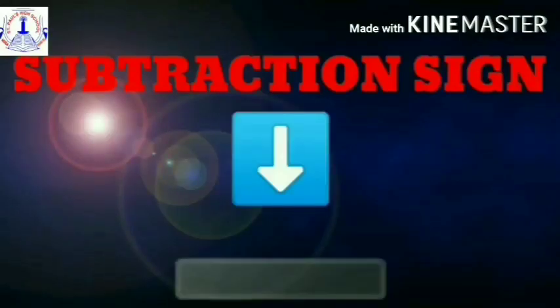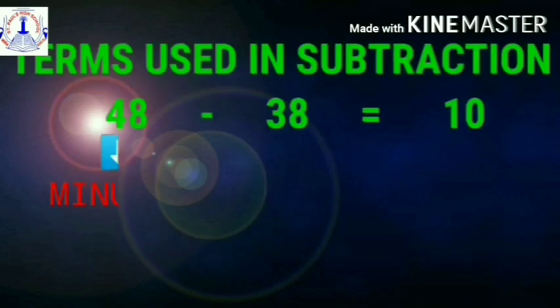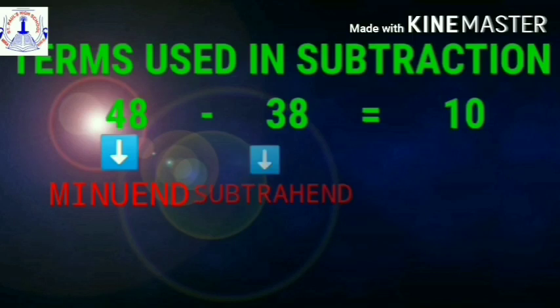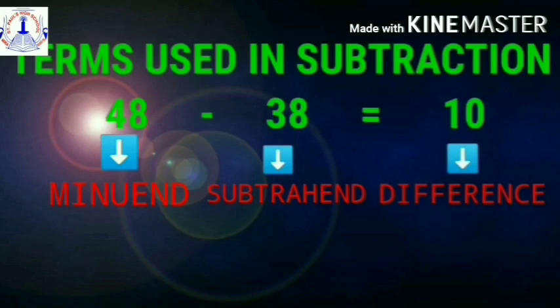We use the subtraction sign to write the subtraction sentence. So, students, do you remember the terms used for the numbers in subtraction? The number from which a number is subtracted is called the minuend. The number that is subtracted is called the subtrahend. And the answer we get after subtraction is called the difference. So, 48 is the minuend, 38 is the subtrahend, and 10 is the difference.